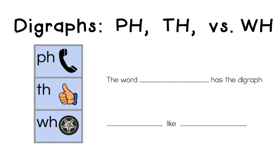So here is a picture of an elephant. Let's say the word elephant, elephant, elephant. Oh, I hear the digraph PH like phone. So I'm going to say the sentence, the word elephant has a digraph PH like phone.